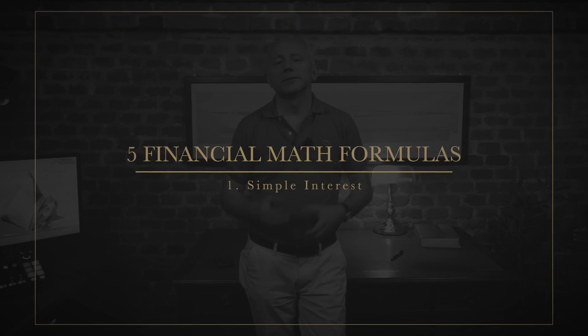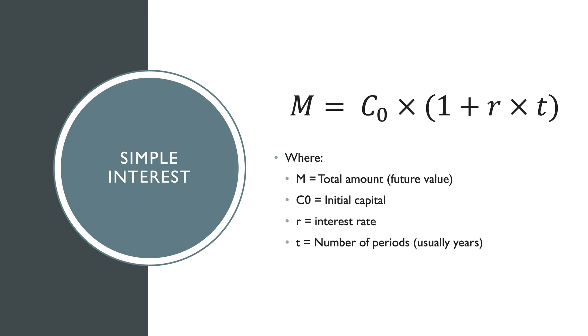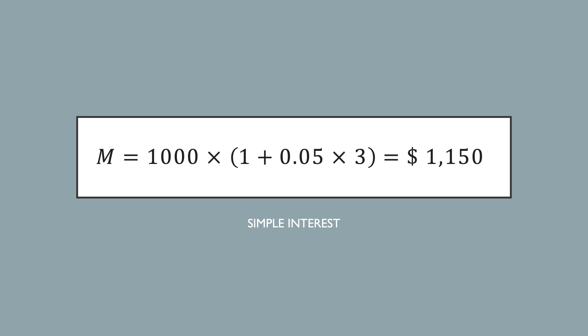Let's start with the absolute basics — the most straightforward formula: M equals C0 times (1 plus R times T), where M is the total amount (the future value), C0 is the initial capital, R is the interest rate, and T is the number of periods, usually years. For example, you invest $1,000 at 5% per year for three years: M equals 1,000 times (1 plus 0.05 times 3) equals $1,150. Thus, you earn $150 in interest. Clean and simple, but only works if you don't reinvest the interest.